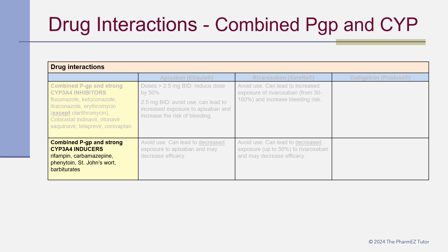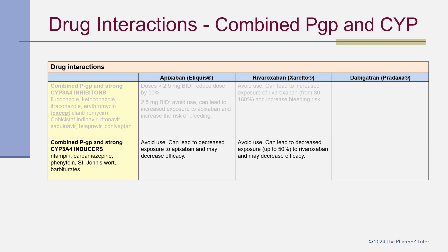For combined PGP and strong CYP3A4 inducers — such as rifampin, carbamazepine, phenytoin, St. John's wort, and barbiturates — apixaban and rivaroxaban should not be used with these drugs, as it can lead to decreased exposure and may decrease efficacy.